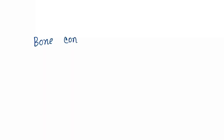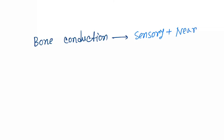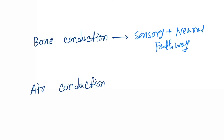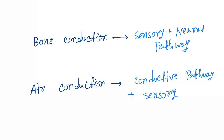Now let's learn another important concept. In bone conduction, what we assess is the sensory plus neural pathway. In air conduction, it includes the conductive pathway plus the sensory pathway plus the neural pathway.